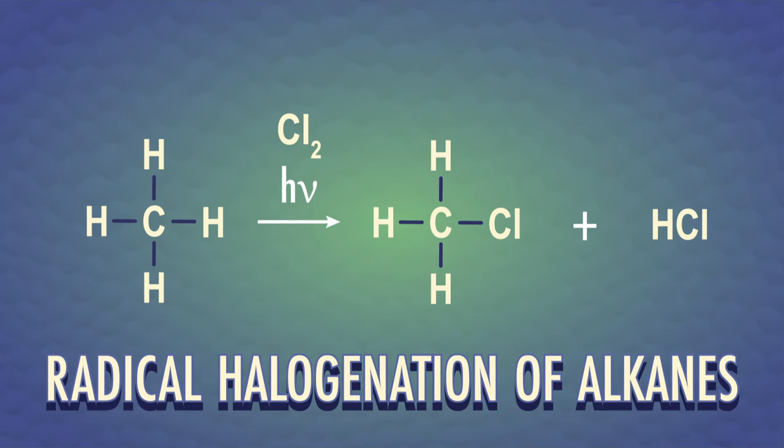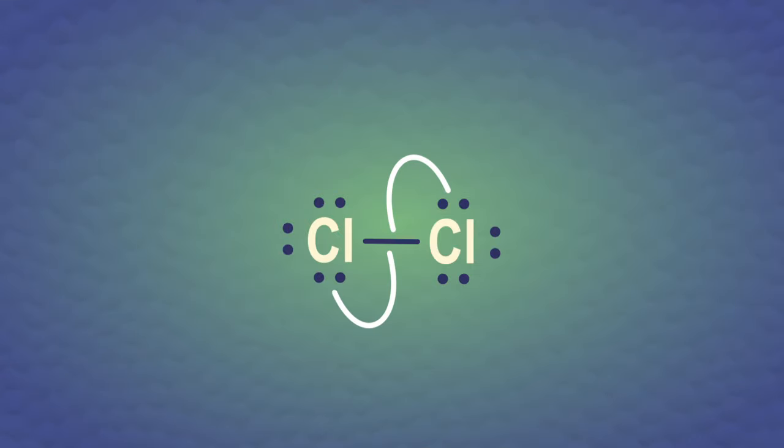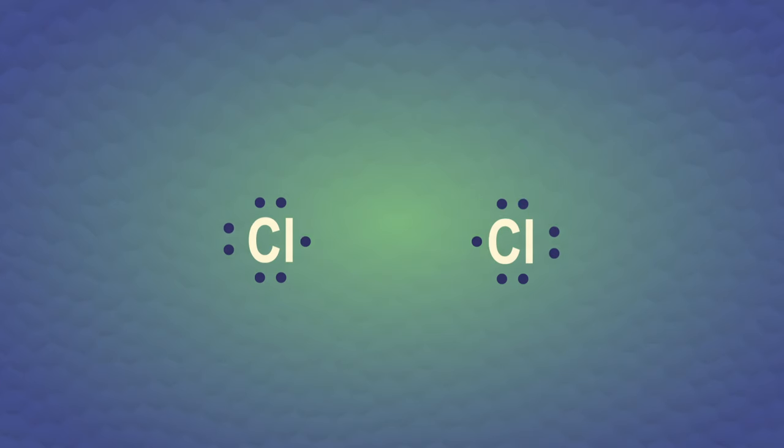To start, let's look at the radical halogenation of alkanes. To keep things simple, we'll use methane as our alkane, the thing that's going to be radically halogenated. Our initiation step makes chlorine radicals, our high-energy party people.